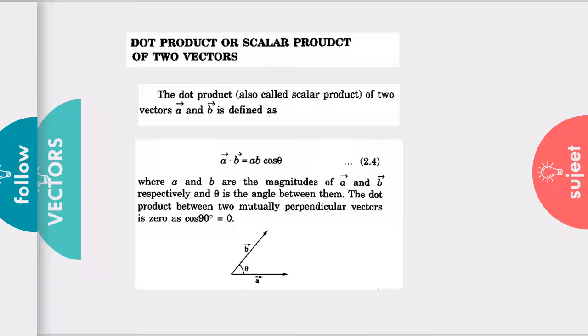Then their dot product will be their magnitude times cosine of 90. Cos 90 is zero, so the whole answer will become zero. You need to understand or memorize that the dot product between two mutually perpendicular vectors is always zero.